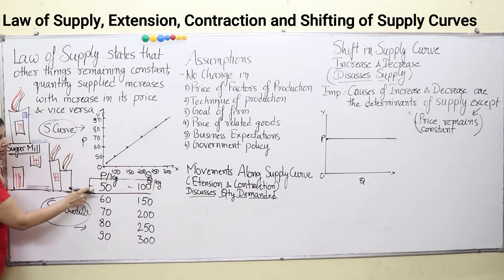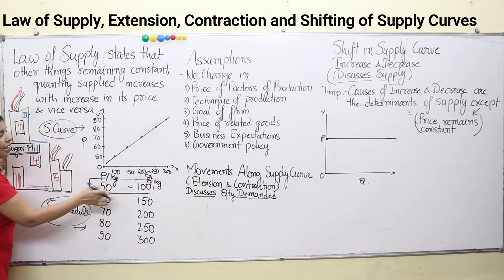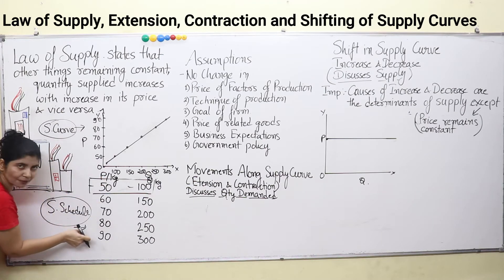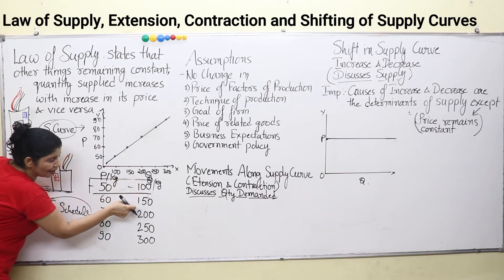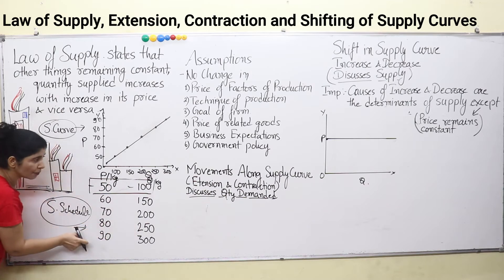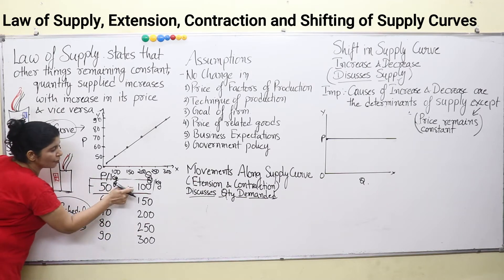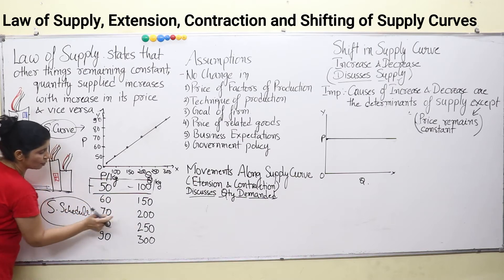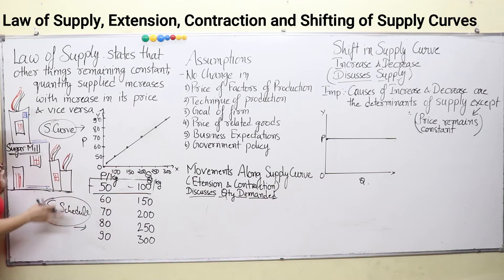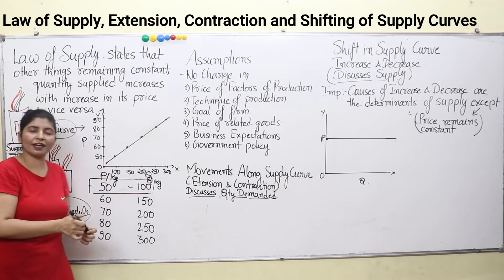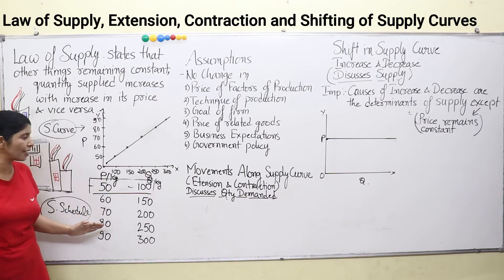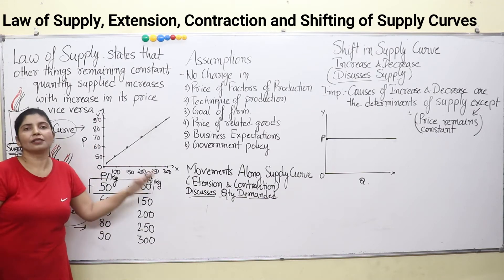Price per kg here is 50 rupees, then 60, 70, 80, 90. When prices are increasing, quantities are also increasing correspondingly. At 50 rupees, the producer is supplying 100 kg of sugar; at 60, it is 150 kg; at 70, it is 200 kg; at 80, it is 250 kg, and so on. So what you can see is that price increase is causing quantity supplied to increase.